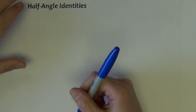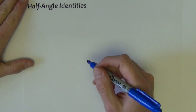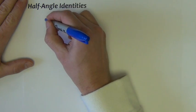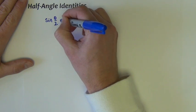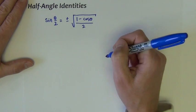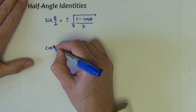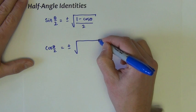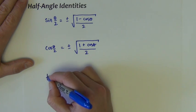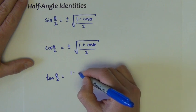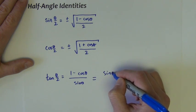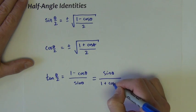The other set of identities in this section are called half-angle identities. And I'll be honest, like I said at the outset, we don't use them as much. Because of that, sometimes I don't even really bother to memorize them. I just kind of look them up when I need to use them. Here they are. Sine theta over 2 is equal to plus minus square root 1 minus cosine theta over 2. Cosine theta over 2 is equal to plus minus square root 1 plus cosine theta over 2. And the tangent theta over 2 is equal to either 1 minus cosine theta over sine theta or sine theta over 1 plus cosine theta.